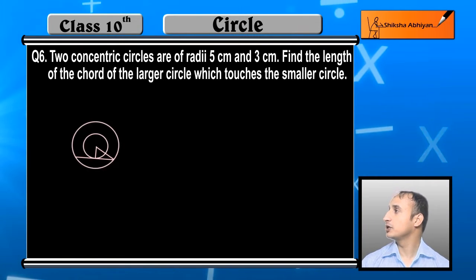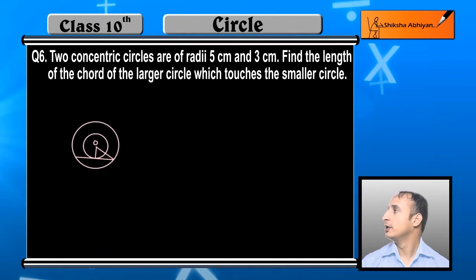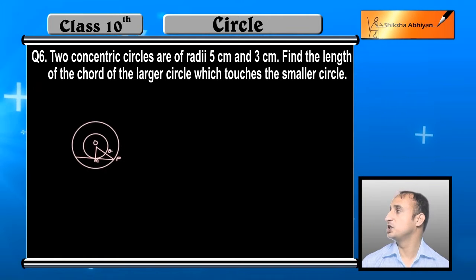You can see this larger circle. Now students, here O is the center and OM is the touching point, and OQ and OP are the radii.